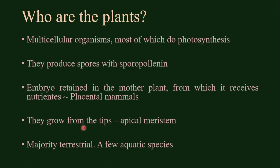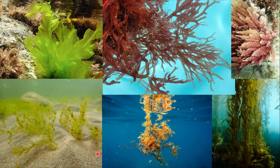The majority of plants are terrestrial, with a few aquatic species. Seaweeds are not plants, strictly speaking. They share a few similarities with plants, but they don't have the exclusive characteristics used to define plants, like embryo retained in the mother plant and spores with sporopollenin. There are three groups of seaweeds: red algae, brown algae, and green algae. Green algae is the group most closely related to plants, especially a subgroup named the charophytes, which is very similar to plants.